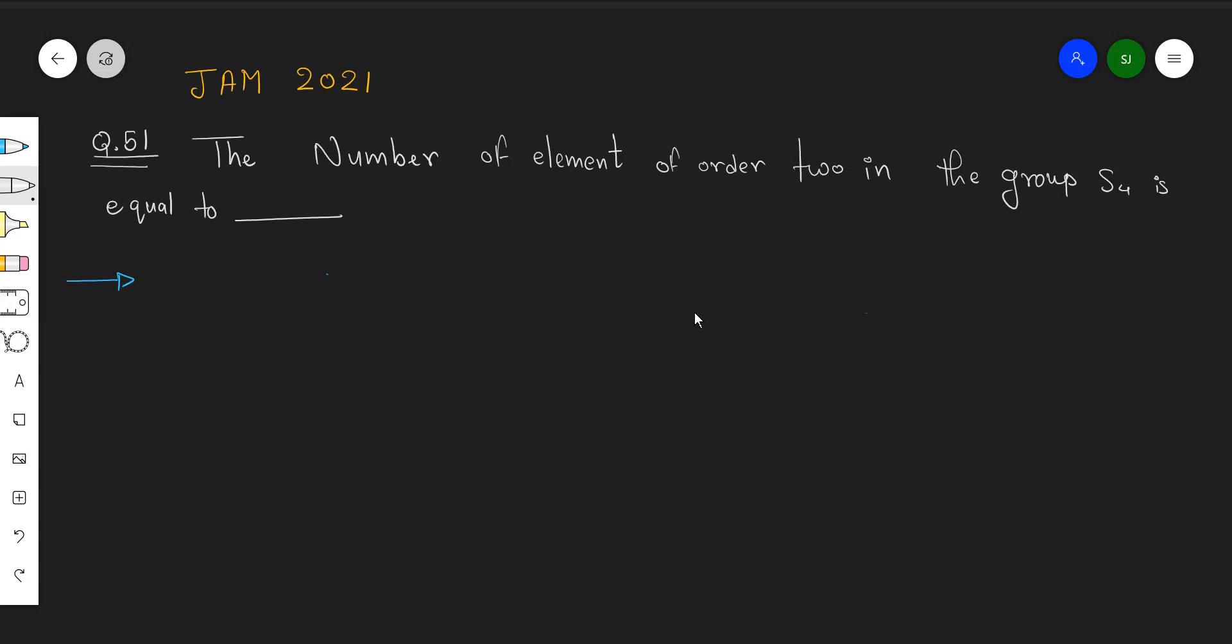In this video we'll be discussing JAM 2021 problem number 51. The question is to find out the number of elements of order 2 in the group S4.